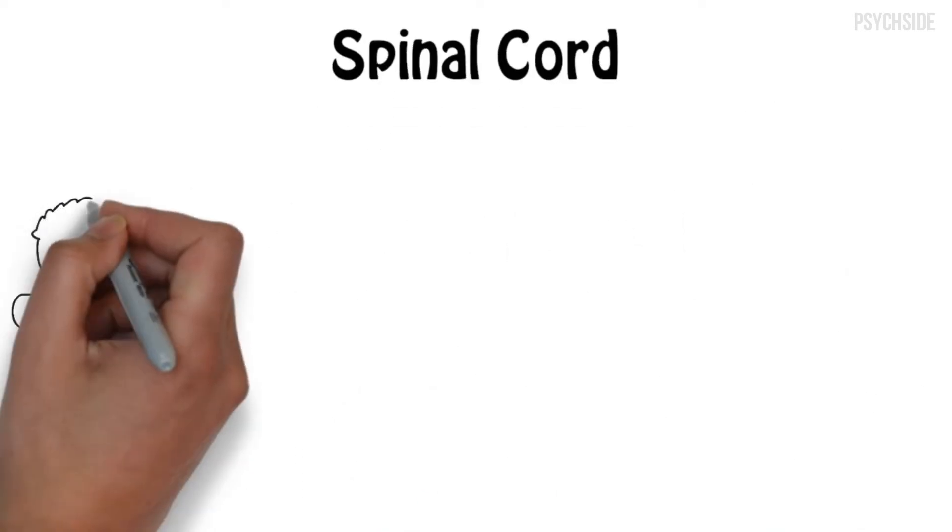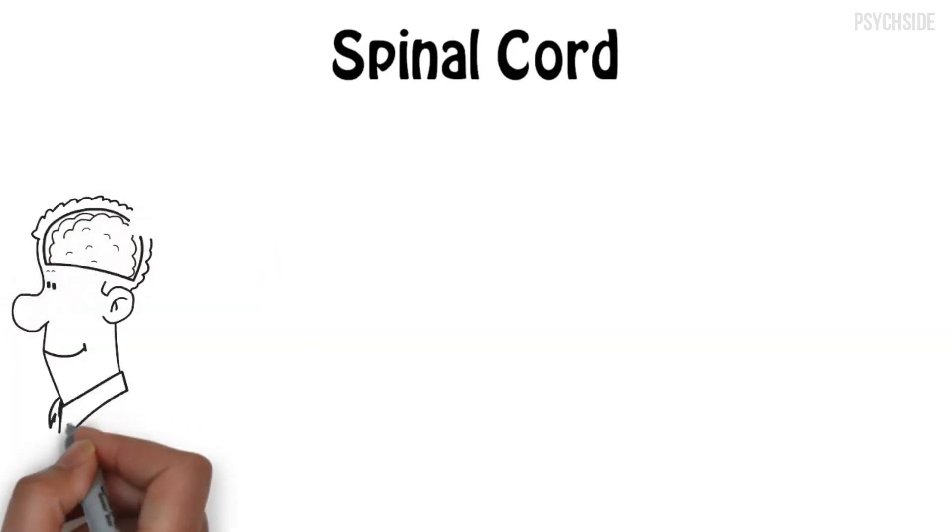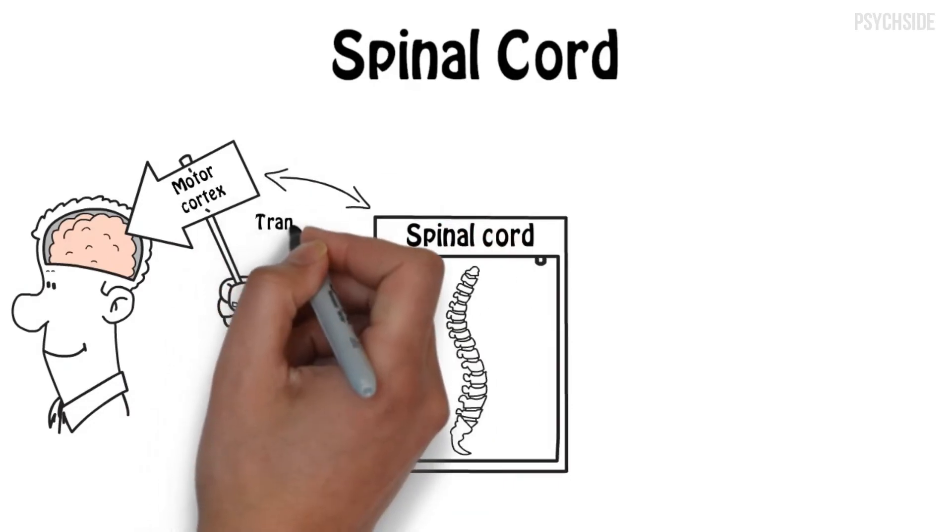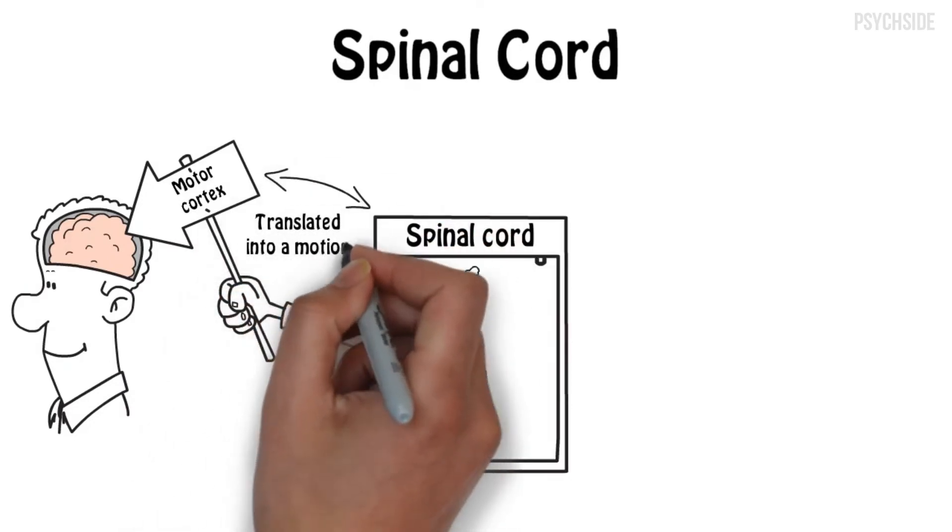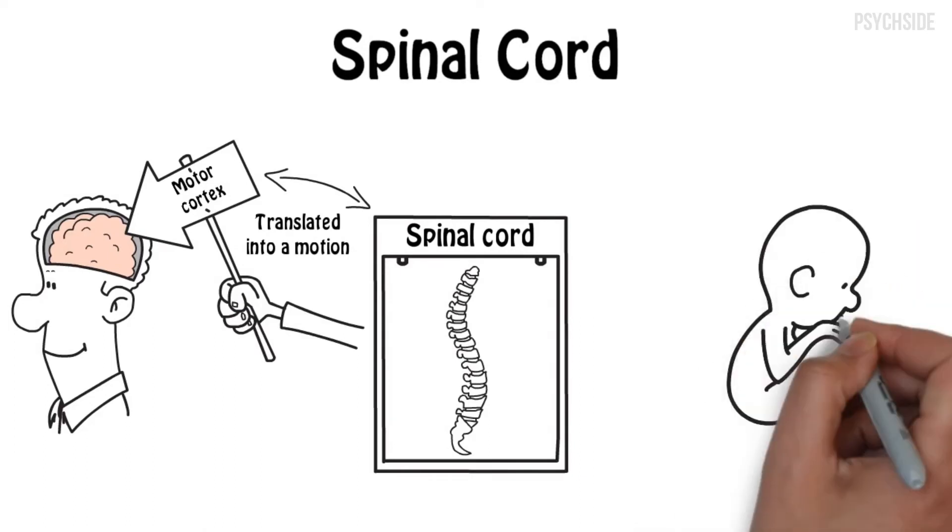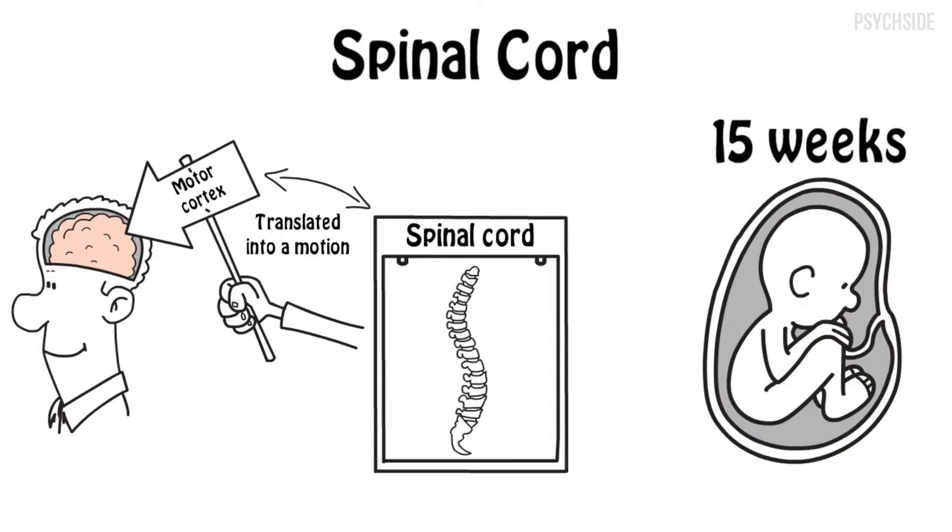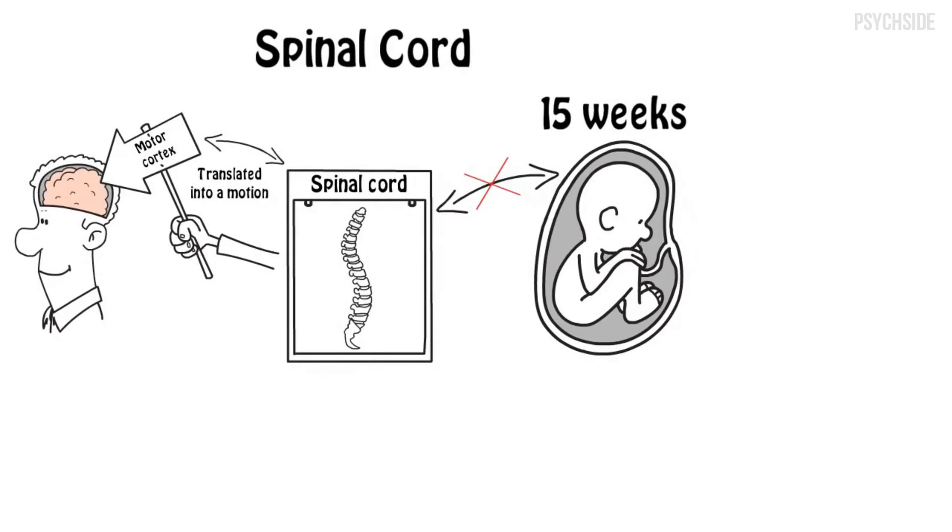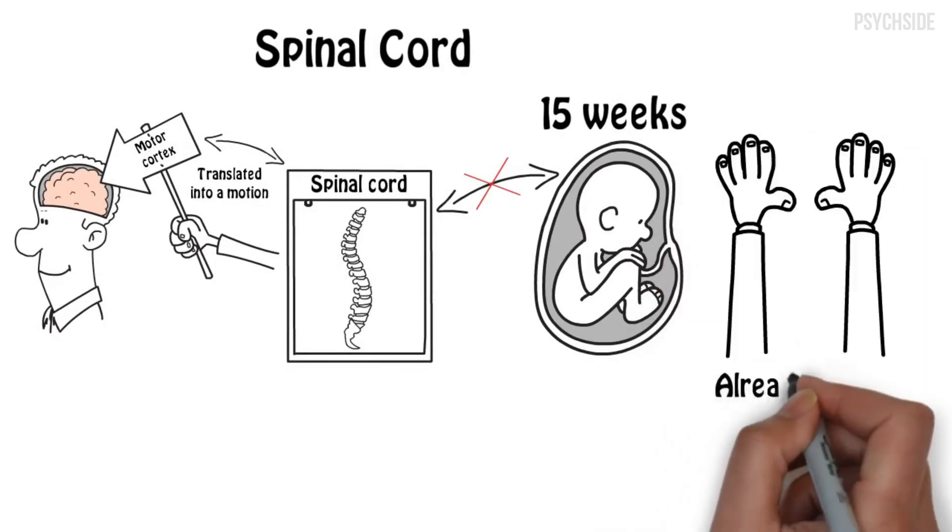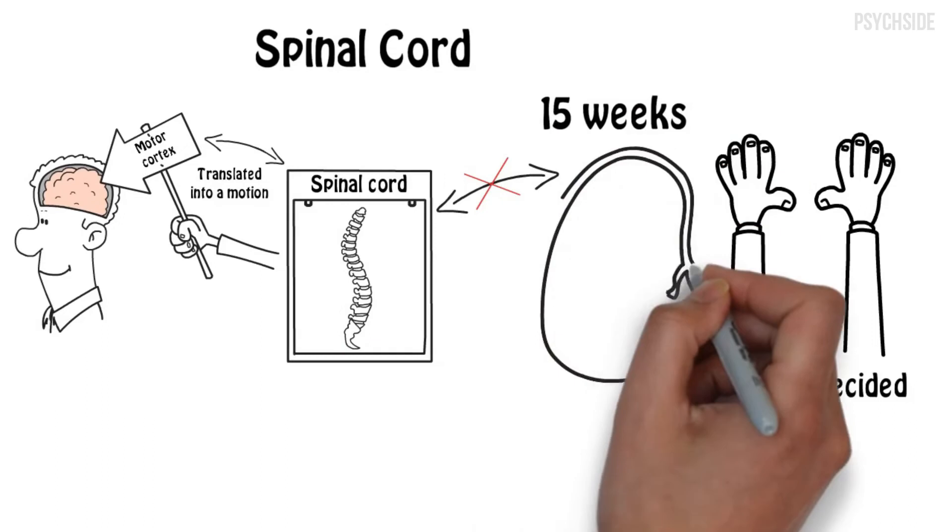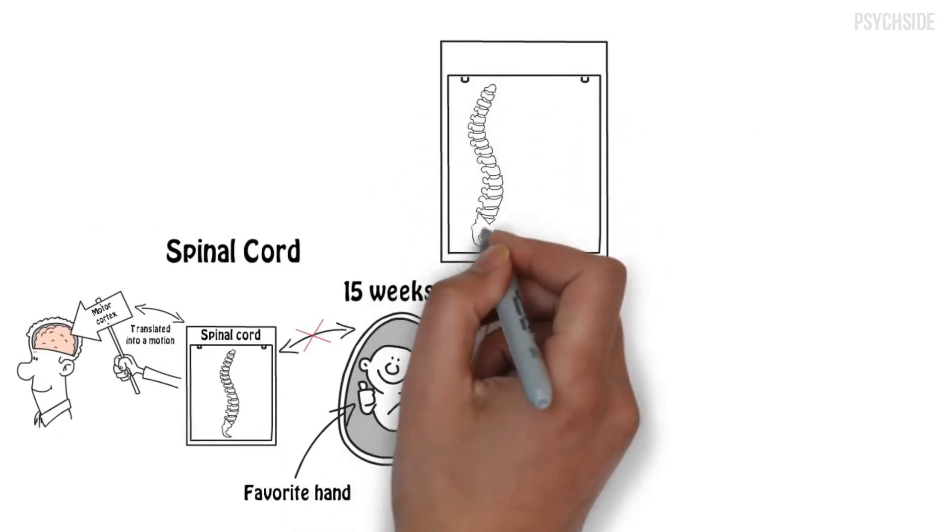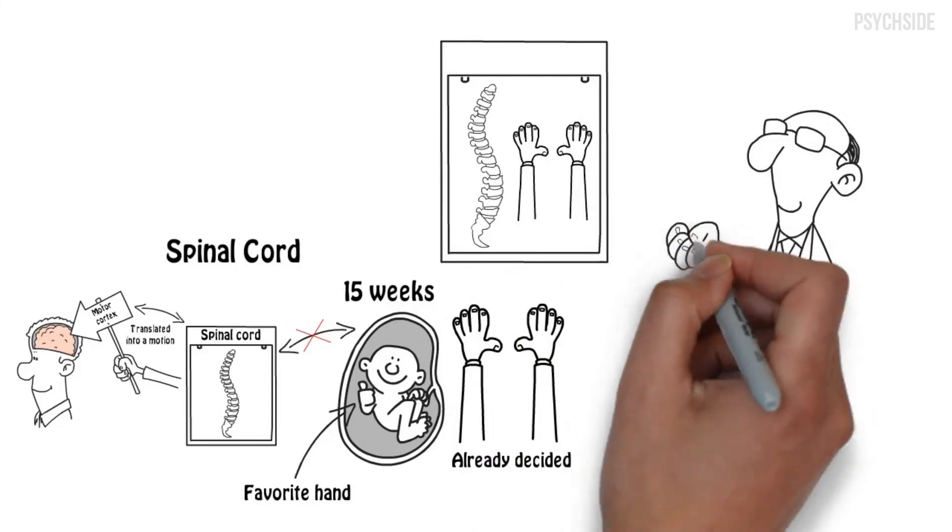Arm and hand movements start in the brain, in an area called the motor cortex, which sends a signal to the spinal cord. This is where the signal is translated into motion. While the baby is growing up in the womb, up until about 15 weeks, the motor cortex and the spinal cord are not yet connected. But right or left-handedness is already decided. In other words, the baby can already make movements and has chosen its favorite hand before the brain starts controlling the body. This led researchers to believe the spinal cord is the decider for hand preference.